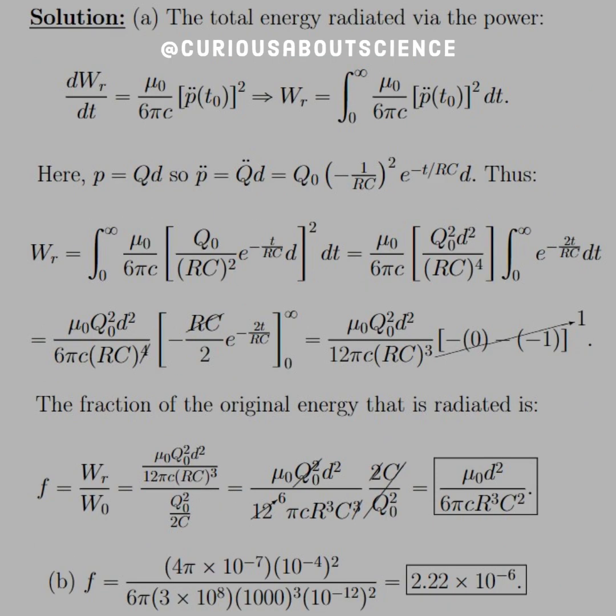Our solution is the total energy radiated via the power. Power is a change of work over time, so we get dW_r over dt. If we plug in this form and solve for the total energy, we integrate from 0 to infinity over all of time: mu naught over 6 pi C times the double derivative of p evaluated at t0 squared.